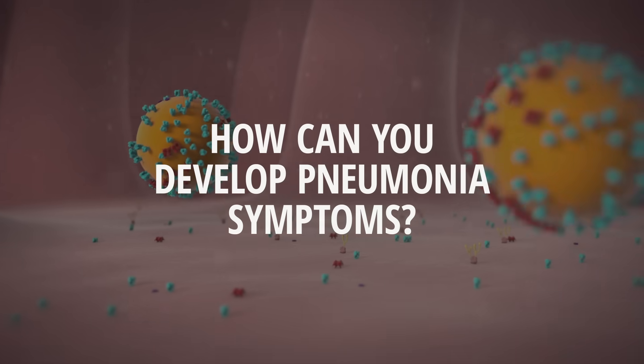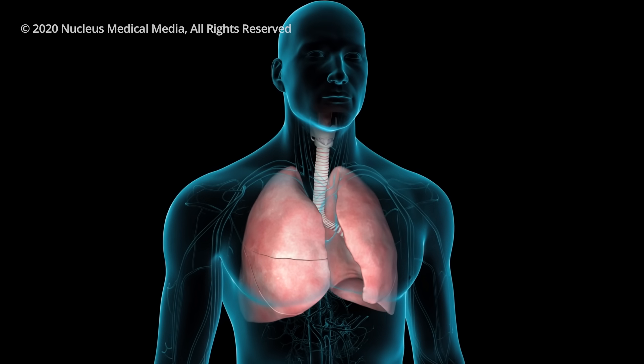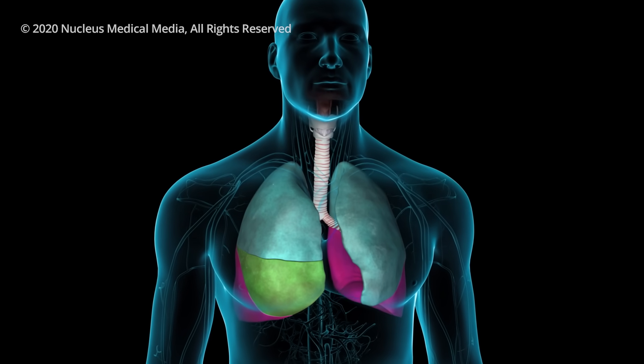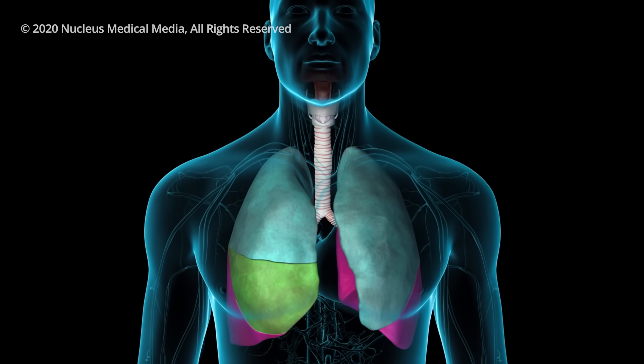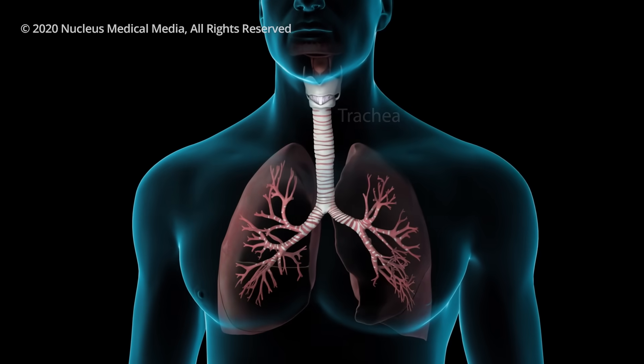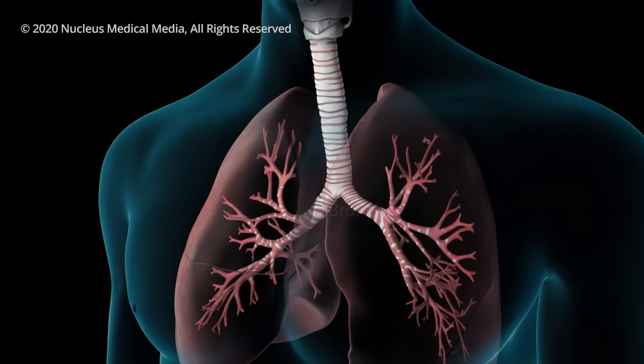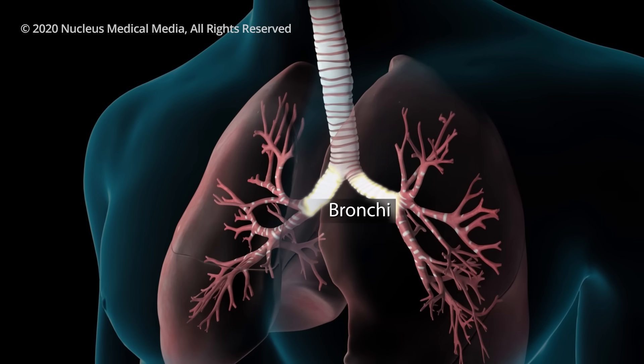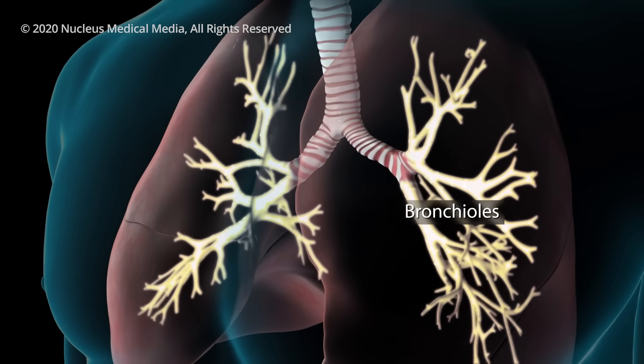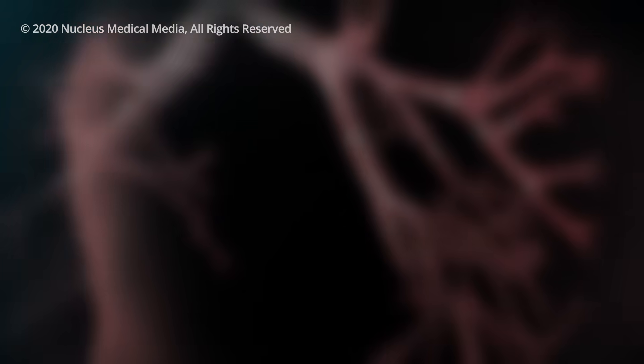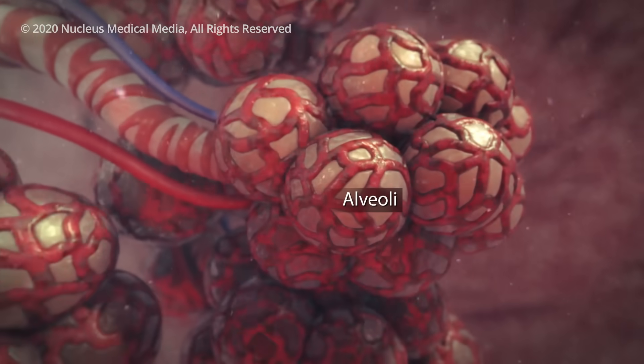For this, we'll have to look into your lungs. Each lung has separate sections called lobes. Normally, as you breathe, air moves freely through your trachea or windpipe, then through large tubes called bronchi, through smaller tubes called bronchioles, and finally into tiny sacs called alveoli.